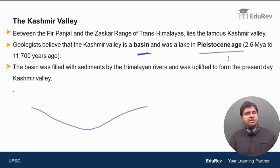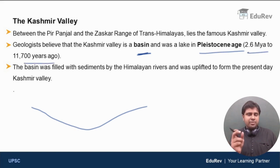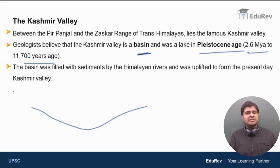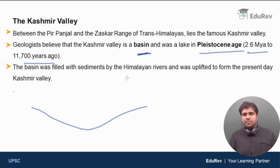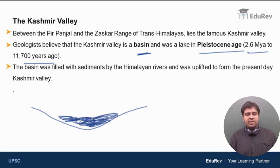The Kashmir Valley was a lake in the Pleistocene Age, which lasted from 2.6 million years ago to 11,700 years ago — MYA meaning million years ago. The basin was filled with sediments by the Himalayan rivers and was uplifted to form the present-day Kashmir Valley. So the Kashmir basin was filled by sediments carried by Himalayan rivers, the land eventually got uplifted, and that is how the present-day Kashmir Valley has formed.